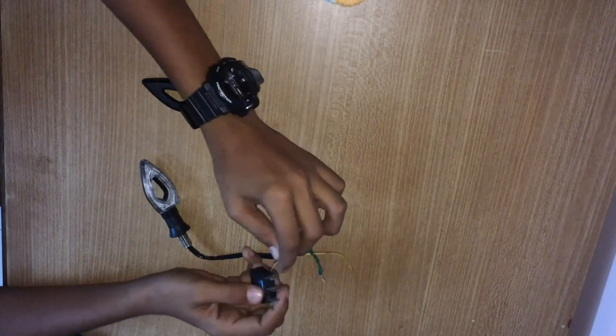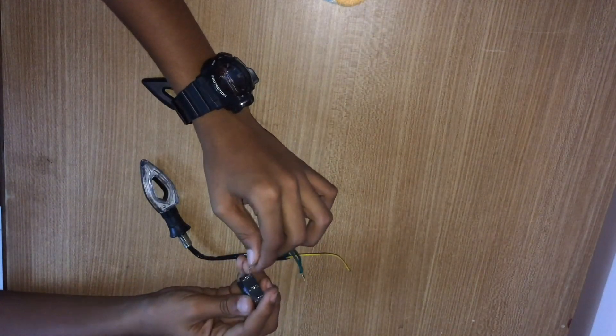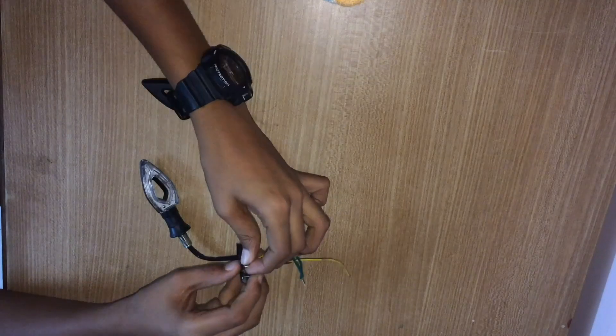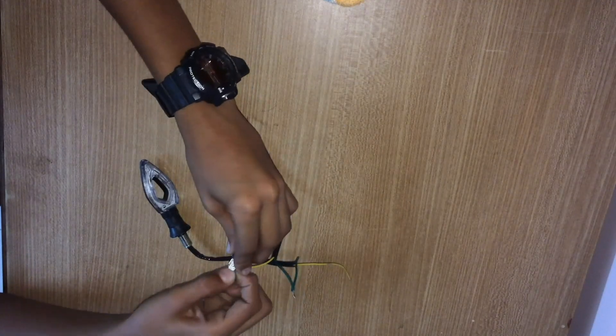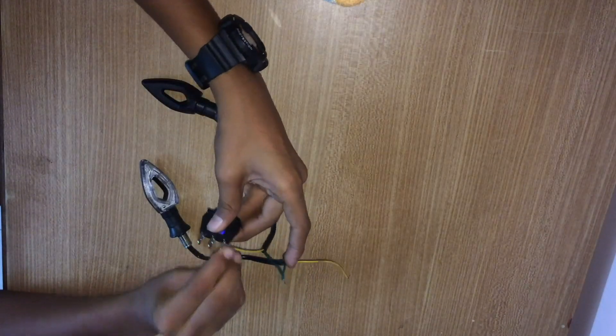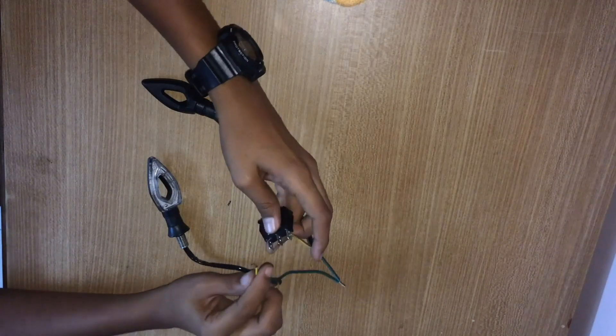Take the positive wire of the left indicator and connect it to either side of the 3-pin DPDT switch as such. Do the same for the other indicator wires. Leave the middle pin alone for now.